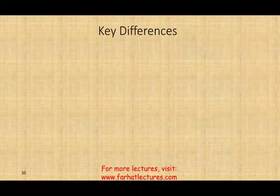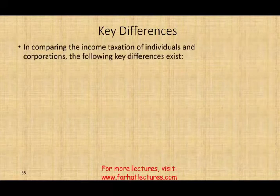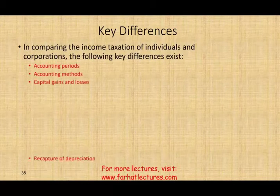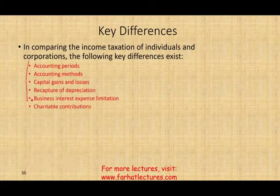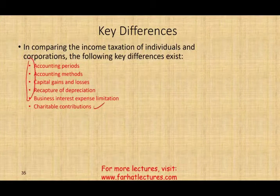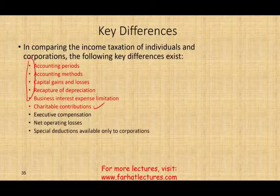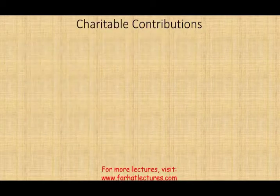We're going through some key differences between income tax of individuals and corporations. These include accounting period, accounting method, capital gains, capital losses, recapture of depreciation, business interest limitation, and charitable contribution. I've already covered all of those, and now we're covering charitable contribution. Coming up next: executive compensation, net operating loss, and a special deduction only available to corporations.